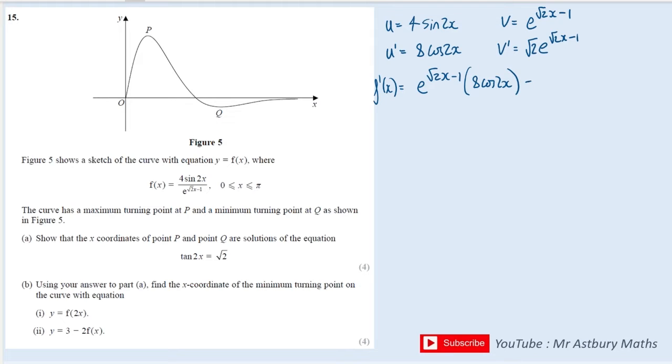minus u, which is 4 sine 2x, multiplied by dv, which is root 2 e to the root 2x minus 1. Great. Ah, don't forget, all over v squared.